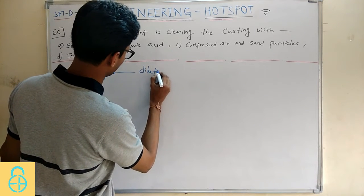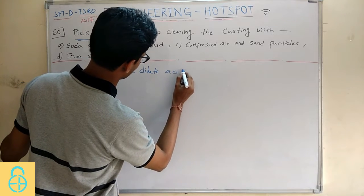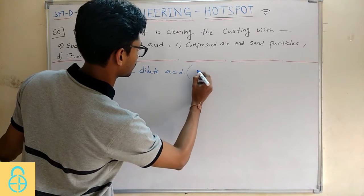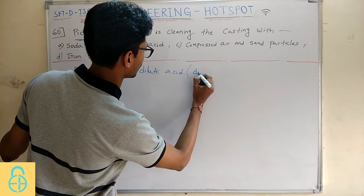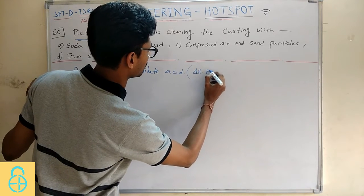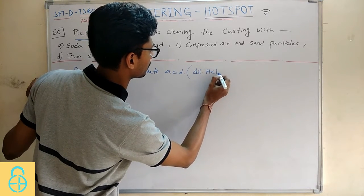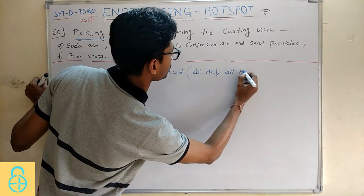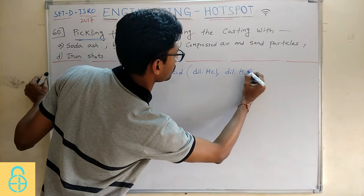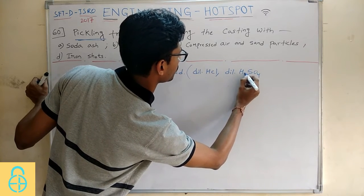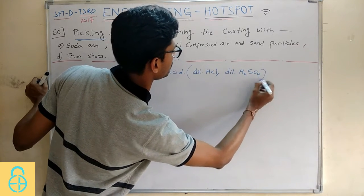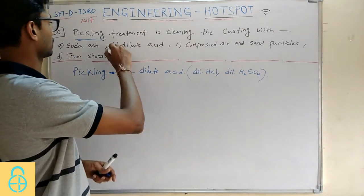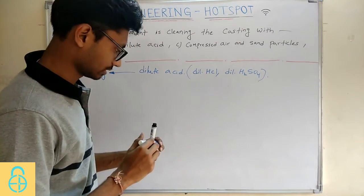And the acids that are preferred are dilute HCl and dilute H2SO4 — basically we prefer this type of acid. So the answer for this is B, dilute acid.